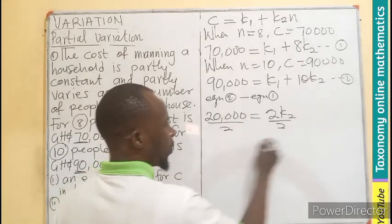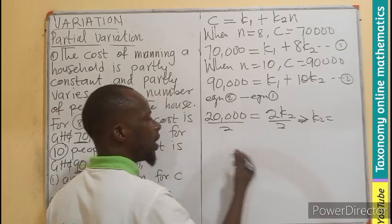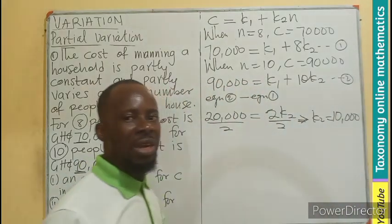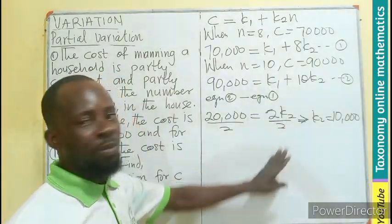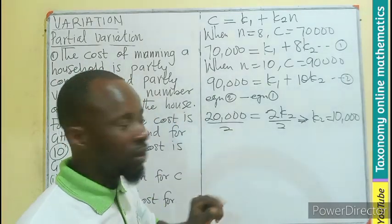Let me write this here. k2 is going to be, if 2 goes here, it gives us 10,000. The value of k2 in this expression is 10,000.